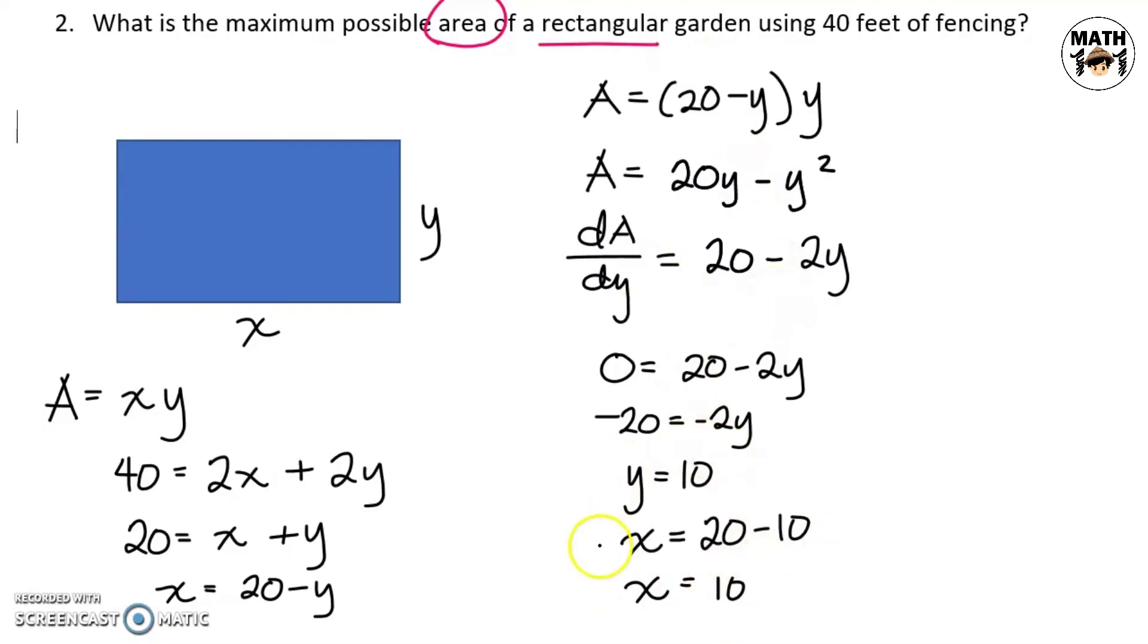Notice yung similarity ng problem na to sa ating previous problem. Ang nangyari is yung sum is parang na-fix sa 20. So, we know na para ma-maximize yung product, dapat maging equal yung dalawang number and as we can see here, equal yung ating length and width. So, given a perimeter, we know that the maximum area will happen if the sides are equal or kapag sila ay naging square. So, the maximum possible area for this is just the product of the sides, 10 times 10. Ang unit natin dyan ay feet. So, yung ating area is 100 square feet.